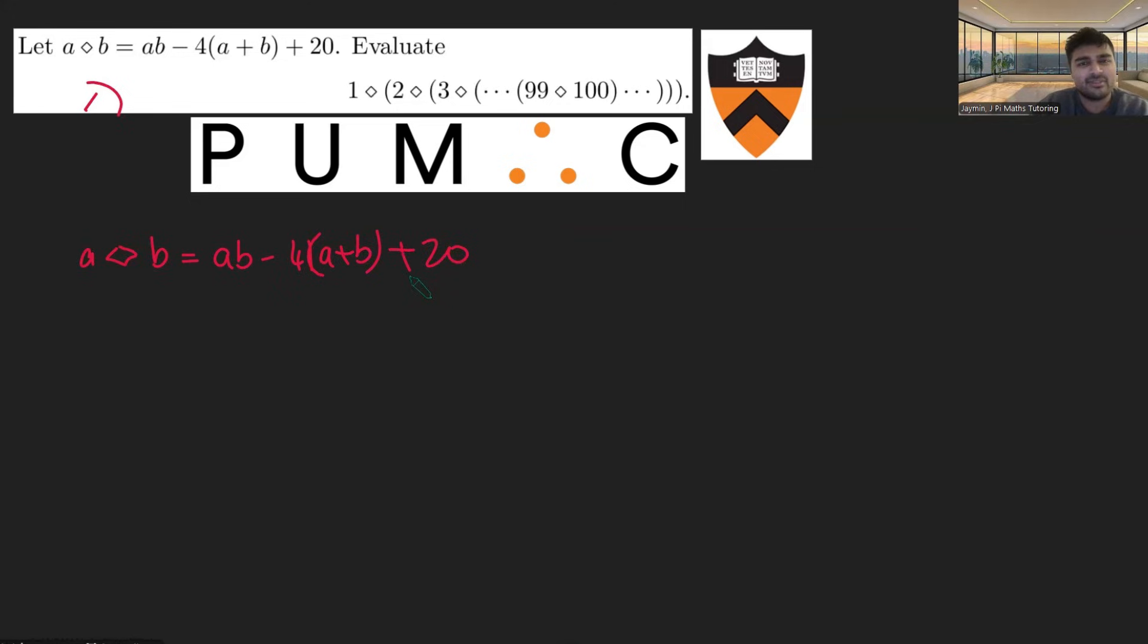But this looks very tempting to factorize. In fact, it's not too difficult to factorize. It's just (A minus 4)(B minus 4) plus 4.